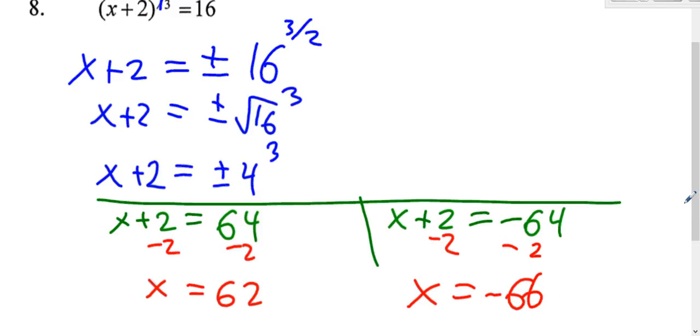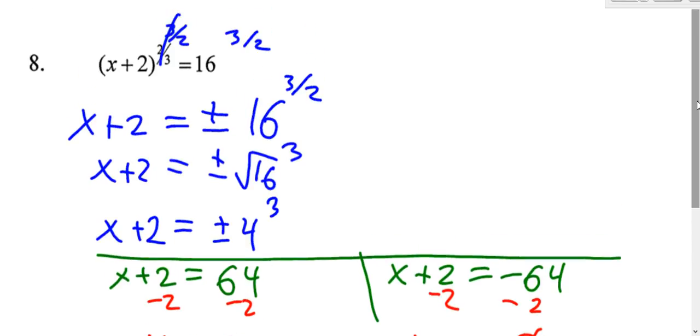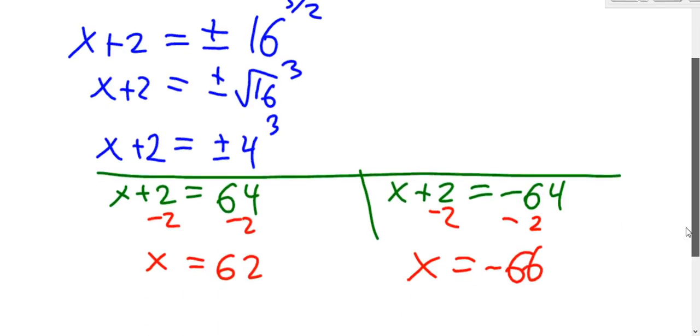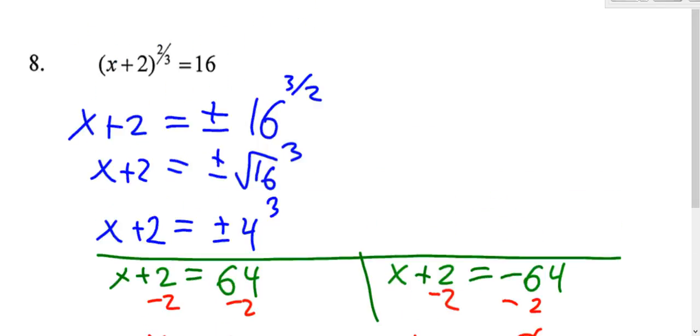You can check them to make sure they both work. They're not extraneous. They should be fine. 62 plus 2 is 64. The cube root of 64 is 4. Squared is 16.